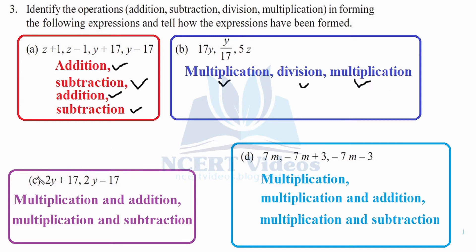For part c: 2y plus 17 and 2y minus 17. In the first case, first y is getting multiplied — therefore, multiplication. And then, whatever the output is coming, 17 is getting added up — therefore, we are having two operations: multiplication and addition. Here again, first multiplication is happening between 2 and y. And then, whatever the output is coming of 2y, from that 17 is getting subtracted. So, multiplication and subtraction are happening in this expression.